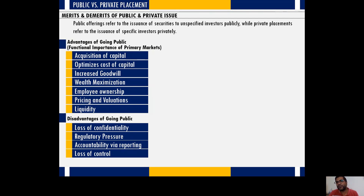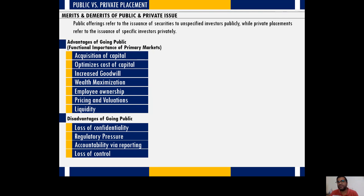Loss of control happens when you issue most of the shares to the public. If promoters have a minimum number of shares, they do not have their say — they don't have the power to make important decisions because they lack majority voting rights. The more shares you issue to the public, the more control you lose in your own organization.